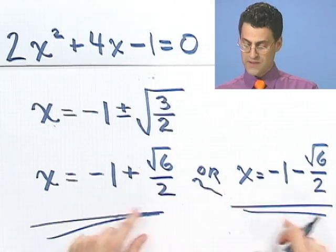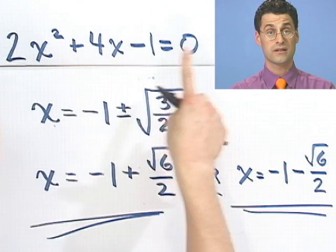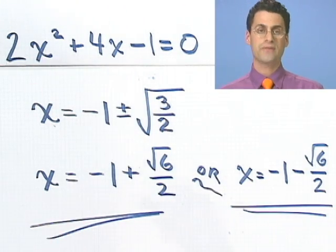Notice that again, these aren't nice numbers like 3 and minus 5, and that's because this thing couldn't be factored. So now we're seeing that we can even solve quadratic equations where we can't even factor it.